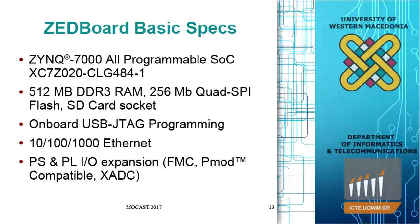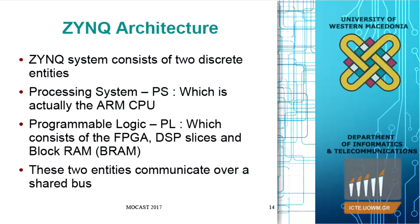There are two discrete entities in the Zynq architecture. The processing system is a hard core ARM — you cannot reconfigure this processor; it is a fixed dual core ARM CPU. On the same chip there is FPGA fabric, which can be programmed according to your needs. You create a VHDL description of the accelerator, synthesize it and create a bitstream, which is then downloaded to the board. These two entities communicate over a shared bus.